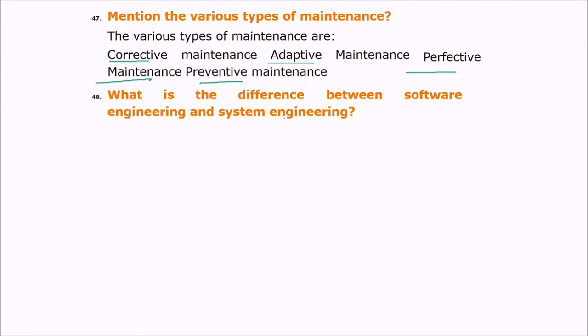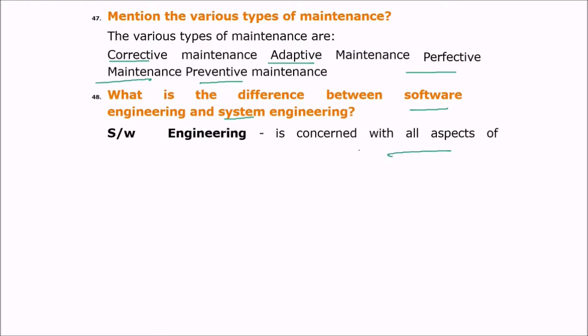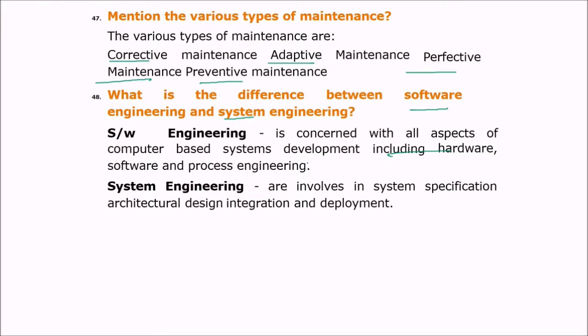What is the difference between software engineering and system engineering? Software engineering is concerned with all aspects of computer-based system development, including hardware, software, and processing. System engineering is involved in system specification, architectural design, and integration.